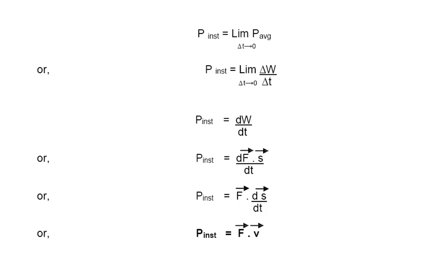Mathematically, instantaneous power will be the limit as Δt tends to zero of P_average. By putting the value of average power in terms of ΔW/Δt, it will change into the first derivative of the work done with respect to time. By putting the value of work done, that is F⃗·s⃗, force dot displacement...